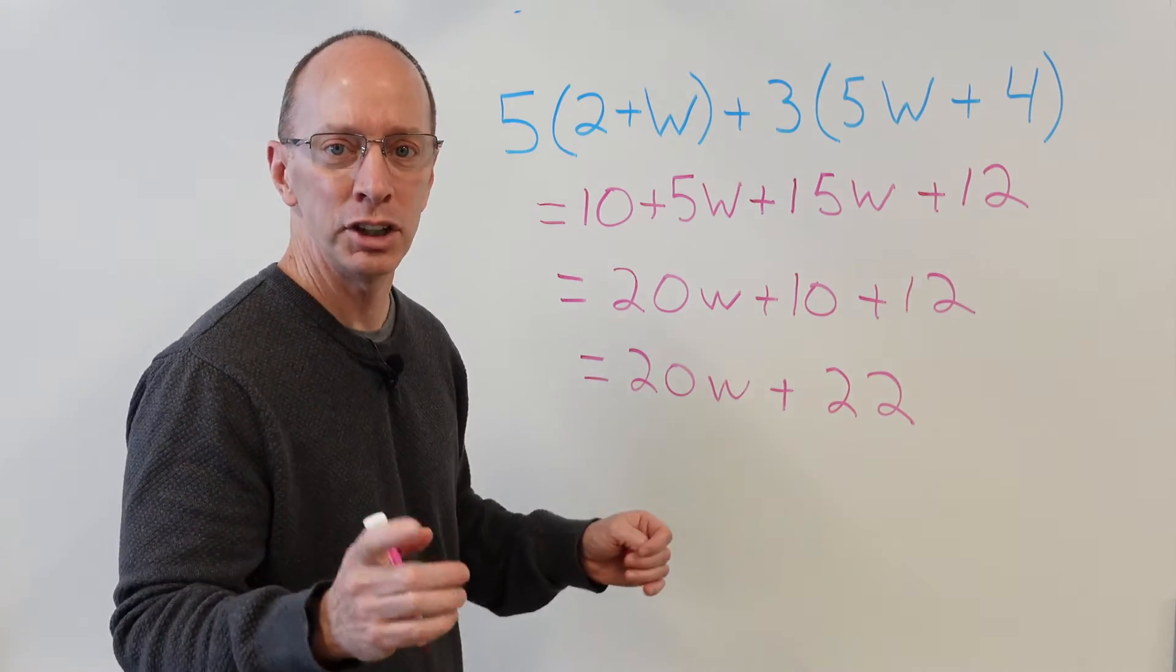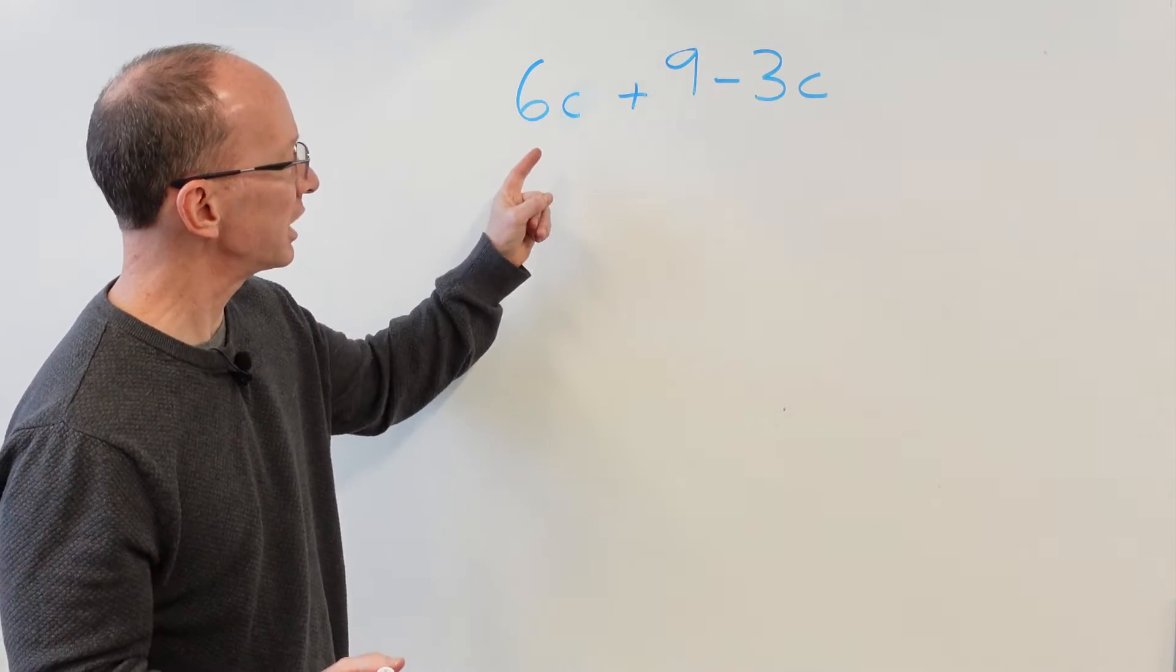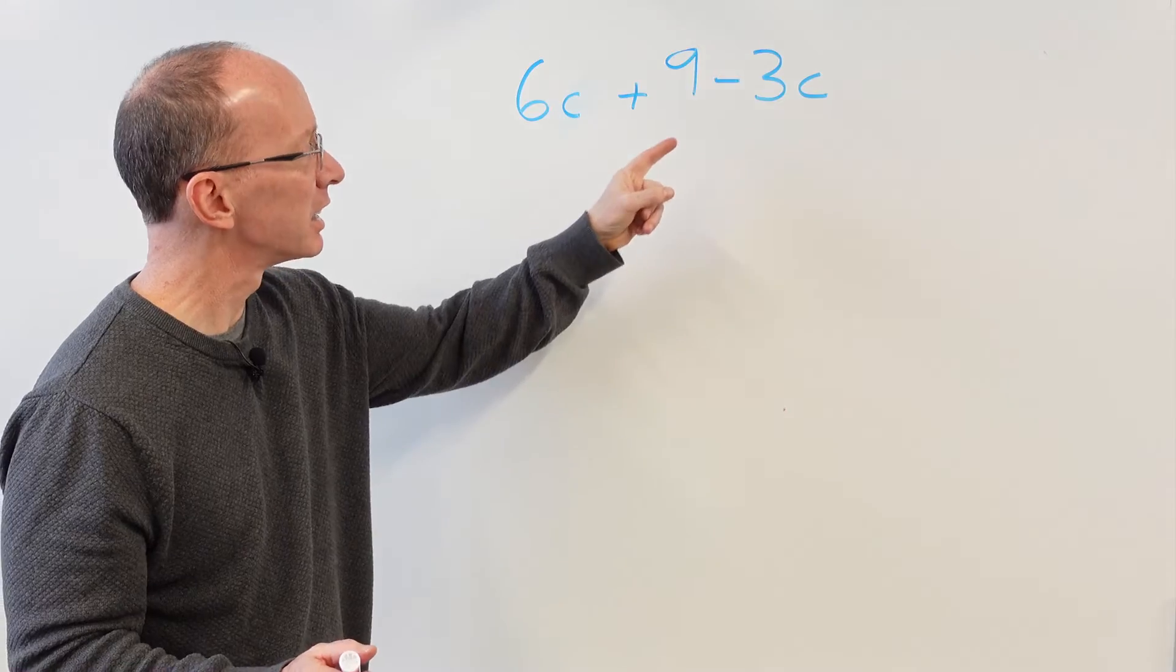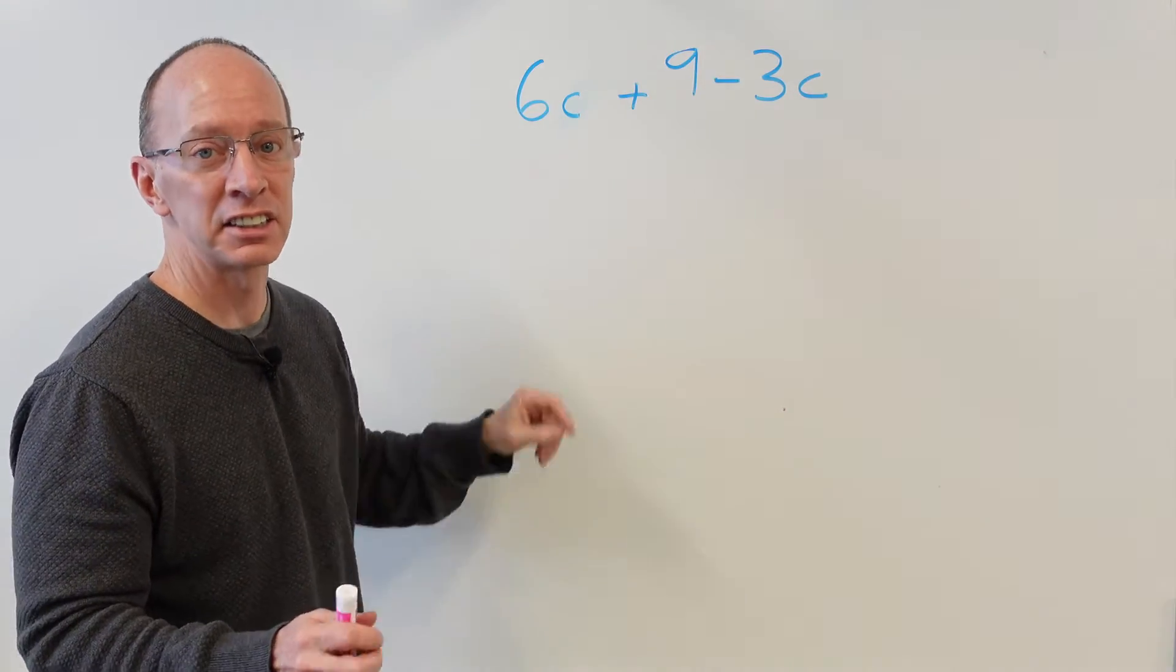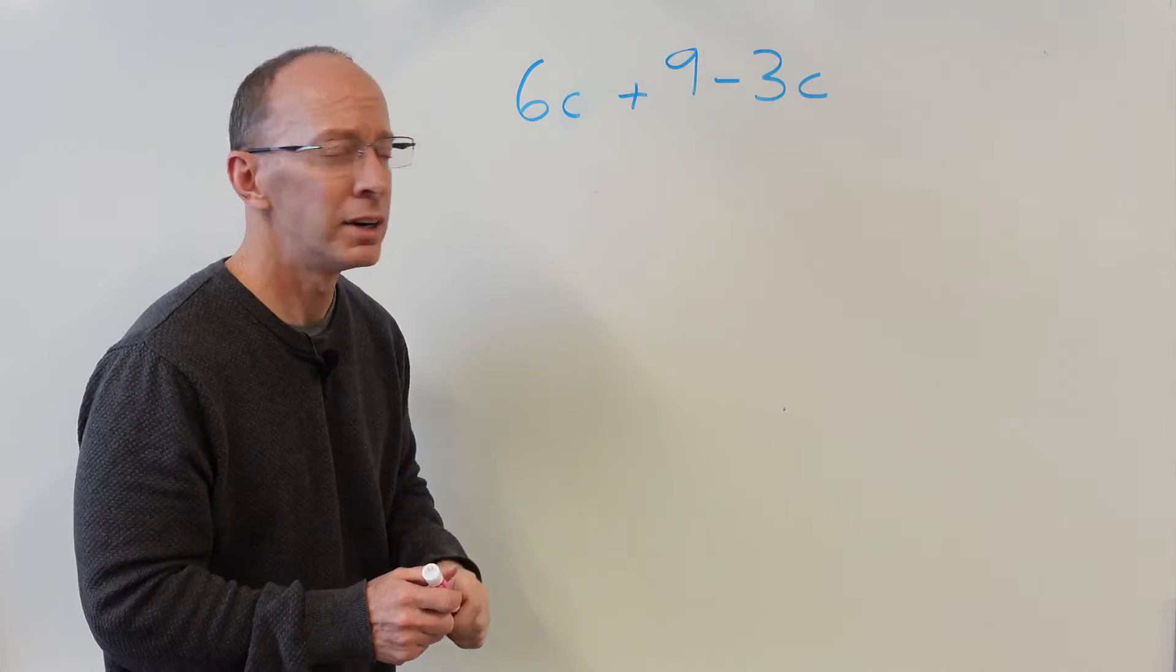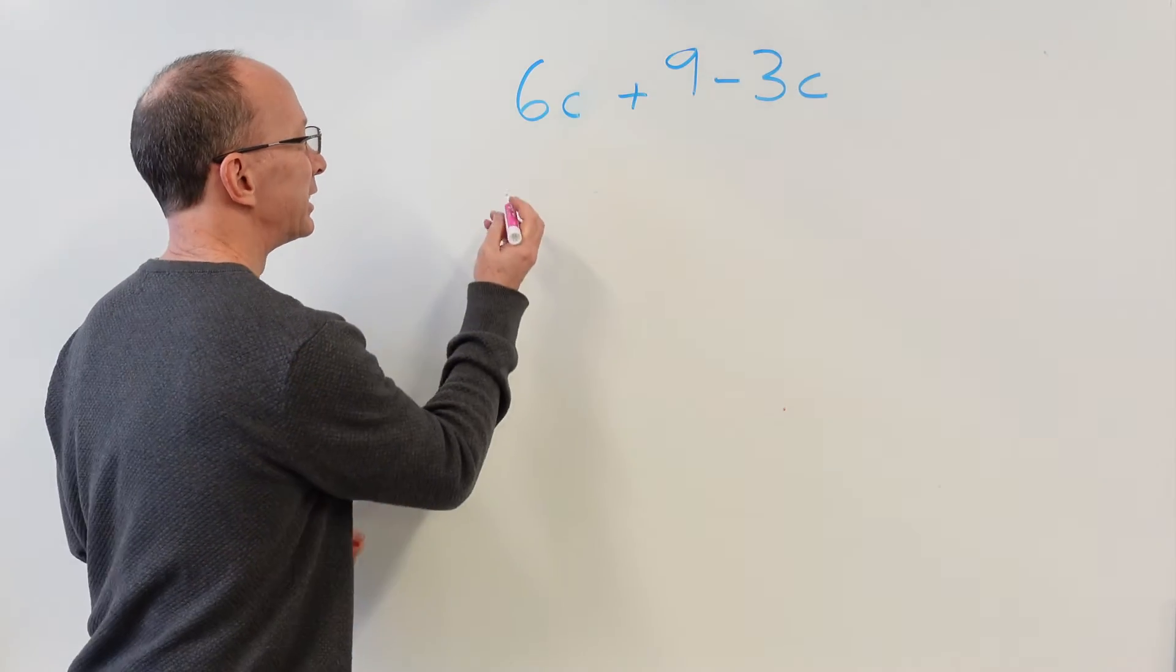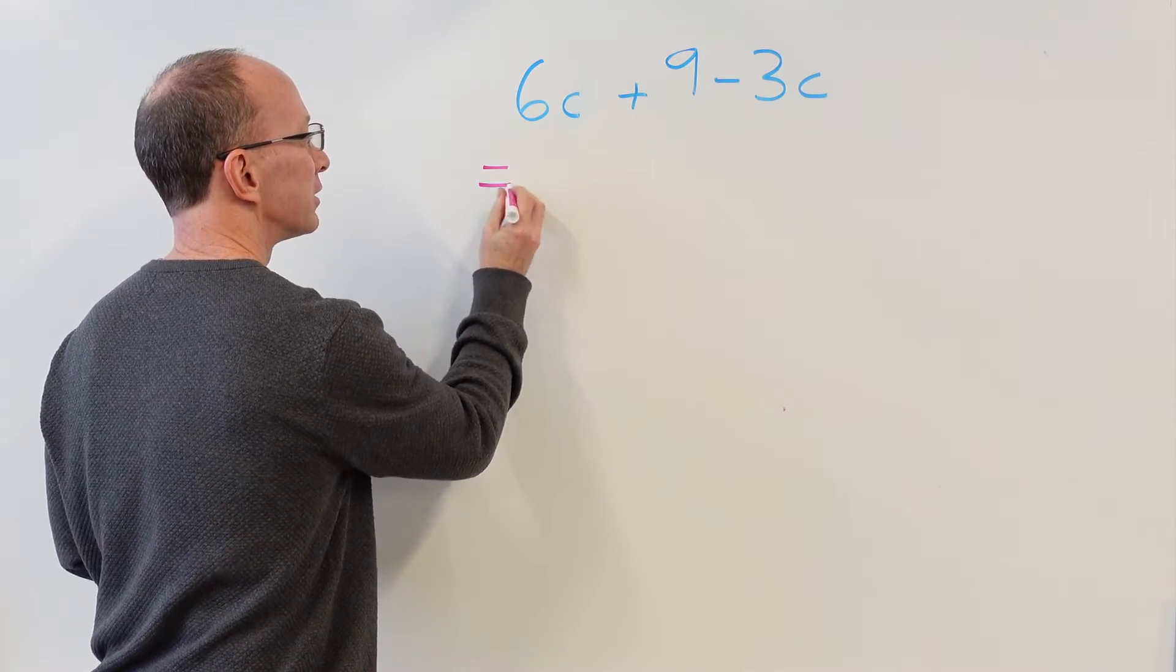Hey, let's do another problem. Ready to do it? Let's do it! We have 6c plus 9 minus 3c. The c is the unknown variable. Let's go ahead and turn this into a sum.